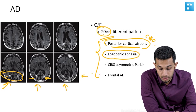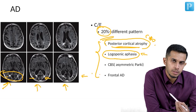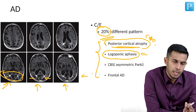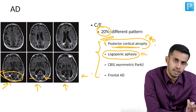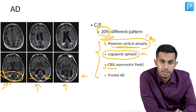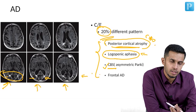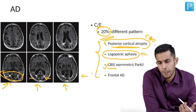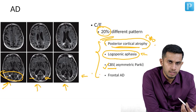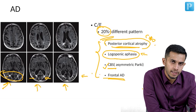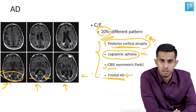Next is logopenic aphasia, where the person cannot bring out words, has agrammatism, and has problems with fluency. Though commonly attributed to frontotemporal dementia, autopsies show Alzheimer's pathology. Another type is corticobasal syndrome, with predominantly asymmetric parkinsonism — one-sided rigidity, bradykinesia, and myoclonus — but again Alzheimer's pathology on autopsy. Finally, frontal AD initially resembles frontotemporal dementia but shows Alzheimer's pathology, with executive dysfunction followed by memory impairment.